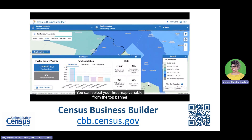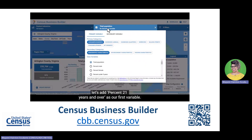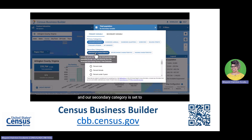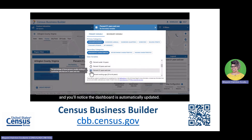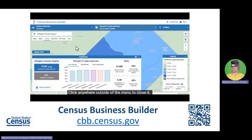There are a few ways to do this. You can select your first map variable from the top banner or within the dashboard. Let's add percent 21 years and over as our first variable. Since we are looking for a demographic variable, we want to make sure our primary category is set to Consumer's Residence and our secondary category is set to Demographic Characteristics. Select percent 21 years and over, and you'll notice the dashboard is automatically updated. Click anywhere outside of the menu to close it.